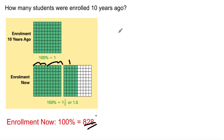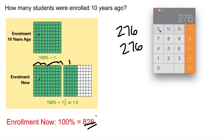So 276, 276. That's 100%. So this and this are equal. So 276 will give me 276 times 2.